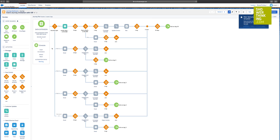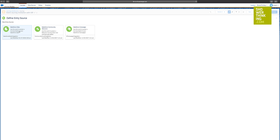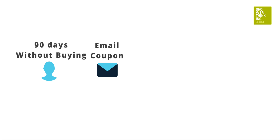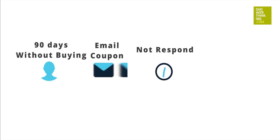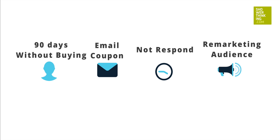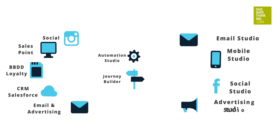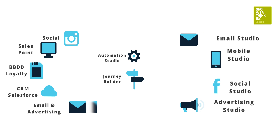Let's see a slightly more advanced example. In this flow, we want to communicate periodically with customers who have not made a purchase in the last 90 days. The input data is prepared by Automation Studio to segment only these types of customers. An email will be sent consisting of a temporary discount, and we will create a separate audience with those customers who do not respond. They will enter a retargeting campaign specially designed to get these customers to purchase again. Email Studio, Mobile Studio, Social Studio, and Advertising Studio allow us to communicate with customers through email, SMS or push messages, social media, or advertising campaigns.